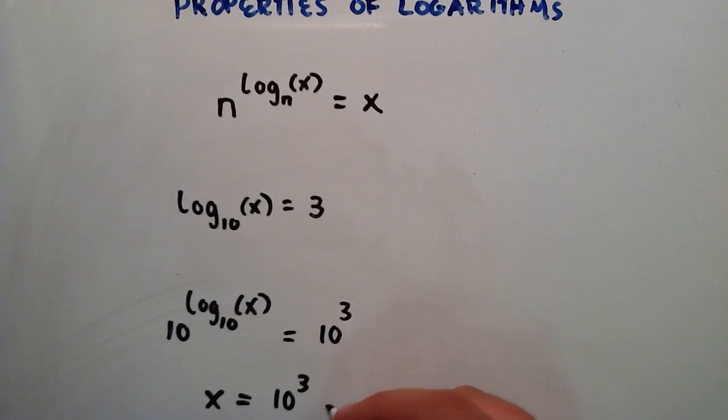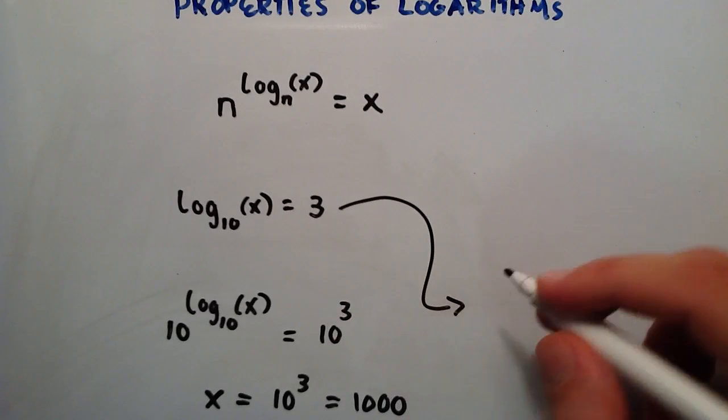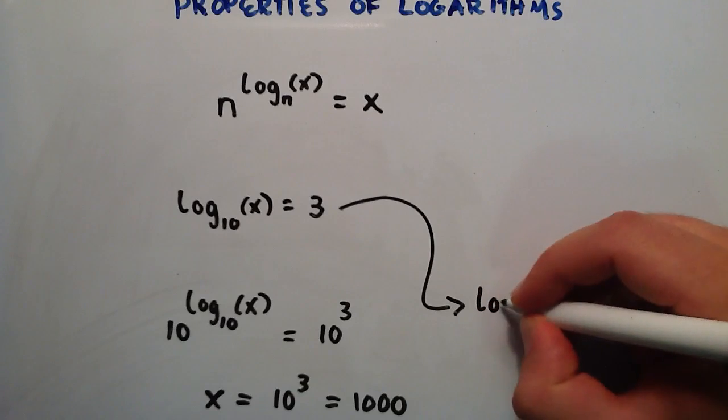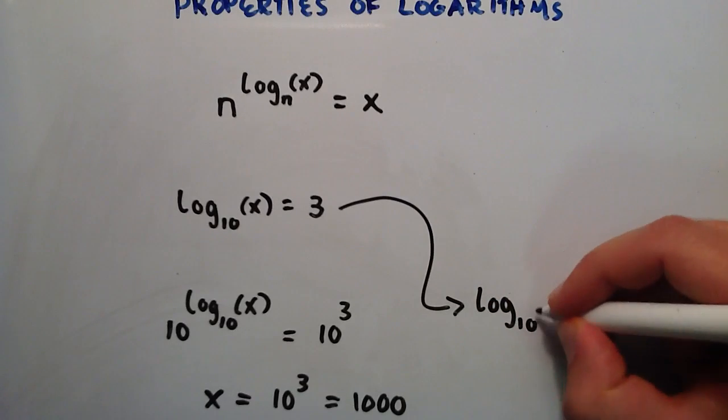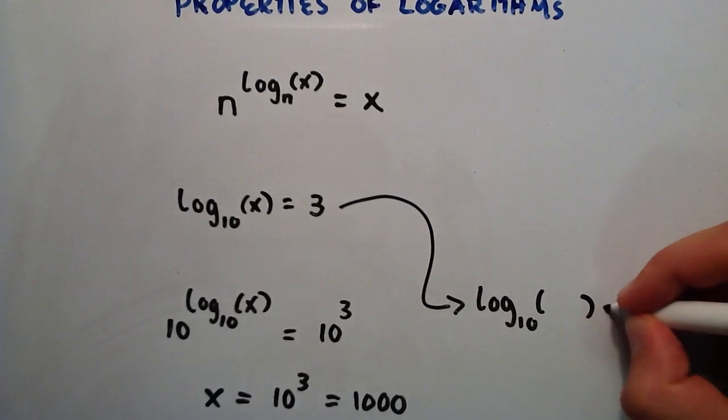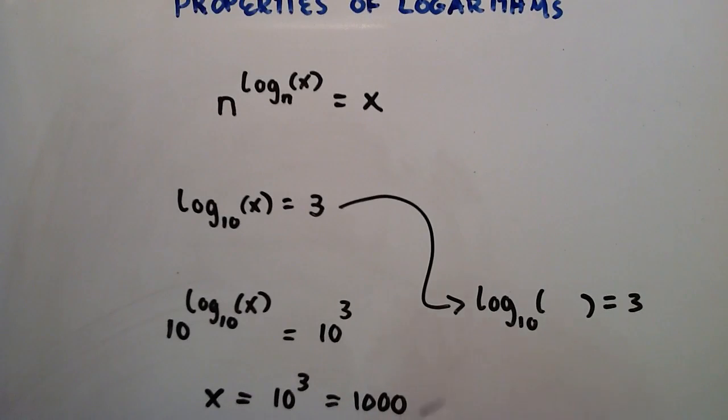So now we have x equals 10 to the third, which is simply 1,000. So if we go back to this expression,